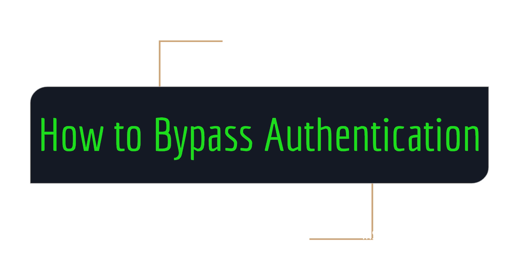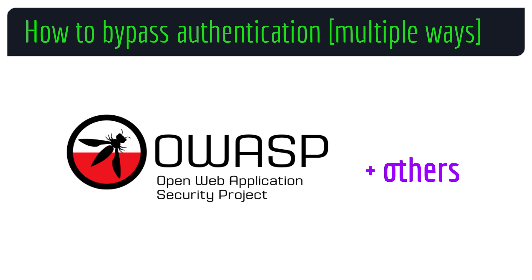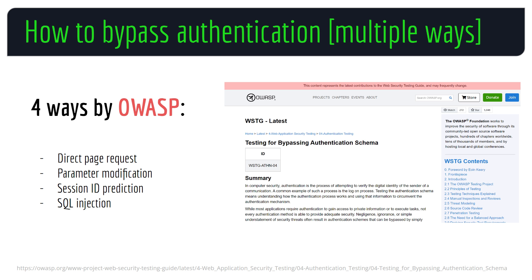Let's talk about a few ways to bypass authentication. I'm not going to speak from the top of my head but actually use credible resources such as OWASP, and I'm also going to link to a great resource at the end. First off, in the Web Security Testing Guide (WSTG) we've got four ways that can be used to bypass the authentication schema in web applications: direct page request or forced browsing, parameter modification, session ID prediction, and SQL injection.